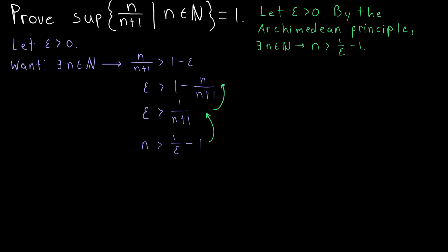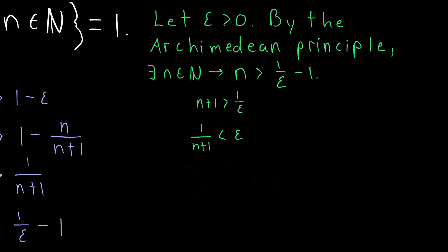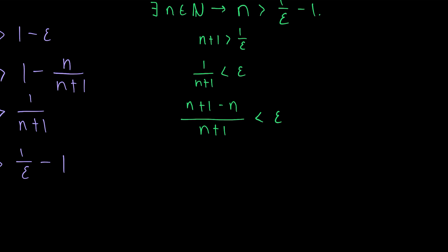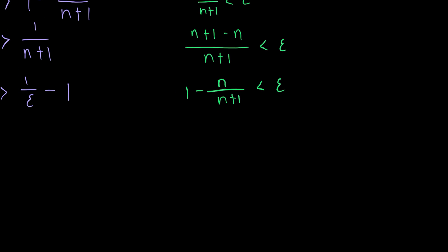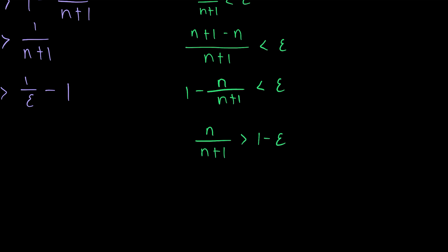So we go back through these steps in reverse order. First, add 1 to both sides of the inequality, then invert both sides — which is the same as dividing both sides by n plus 1 and multiplying both sides by epsilon. Then we add a convenient form of 0 to the left side by adding n and subtracting n in the numerator. Now the left side can be nicely rewritten: n plus 1 over n plus 1 equals 1, giving 1 minus n over n plus 1 is less than epsilon. Finally, subtract 1 from both sides and multiply by negative 1, and we arrive where we want to be.